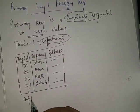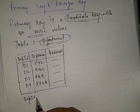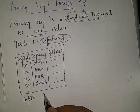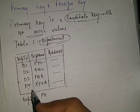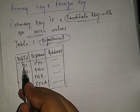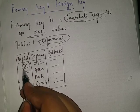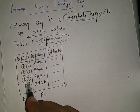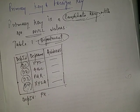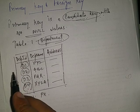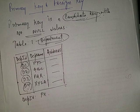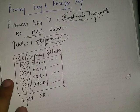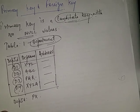For this particular department table, let us say that department ID is the primary key. Now if department ID is the primary key, each record in the department ID attribute should be unique — which it is — and there should be no null values in this department ID, which also holds in this particular case.